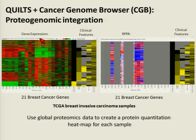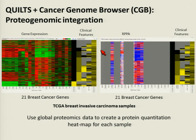Some of these are the same samples we're working with, and they have data across different genome-wide features. I've chosen some breast cancer genes and you can see gene expression sorted by clinical features. We're going to do the same with our tumor samples so we can look at proteogenomics both within samples and across samples.